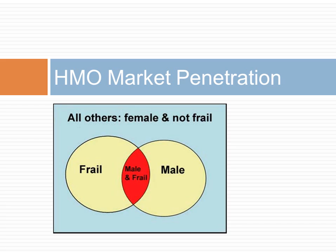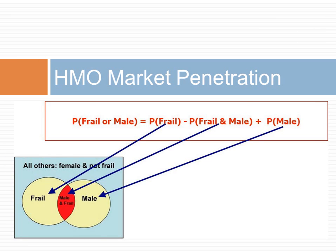Let us look at an example. We want to understand who will join our accountable care organization. This information is important in calculating market penetration and the selection bias we may face. The probability of a frail or male elderly joining is calculated by the sum of the probability of the frail elderly joining, plus the probability of a male joining, minus the probability of a male frail elderly joining.